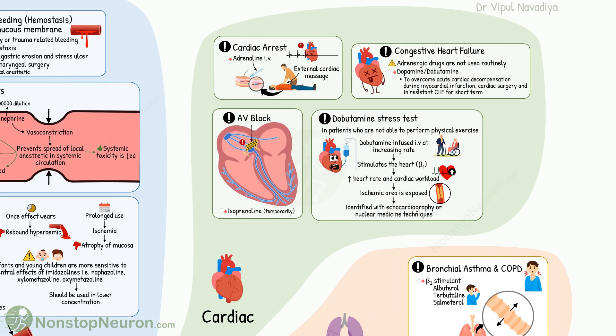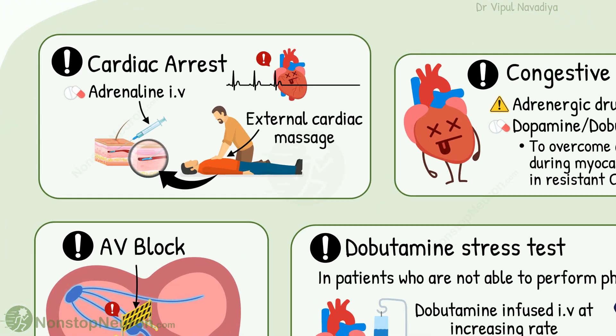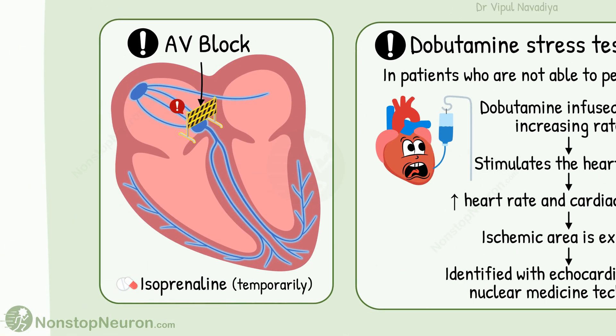Now let's talk about cardiac uses. First, cardiac arrest — the heart has stopped beating. Here, adrenaline given intravenously along with external cardiac massage can save the patient. Next, AV block. In this, the impulse conduction is impaired at the AV node. Isoprenaline can be used temporarily to maintain ventricular rate.